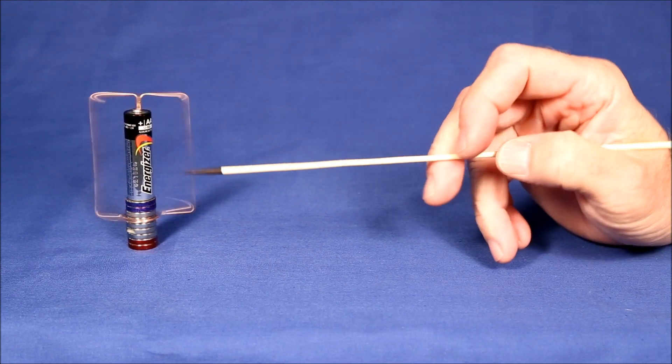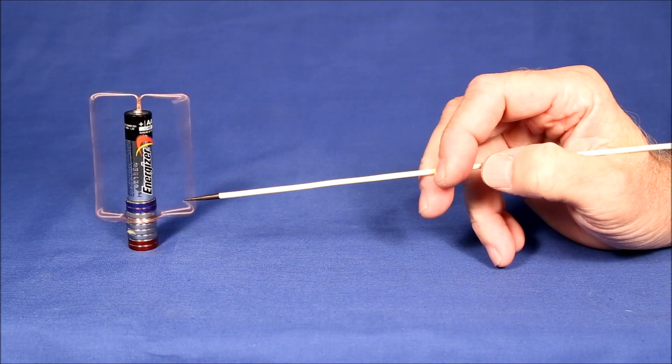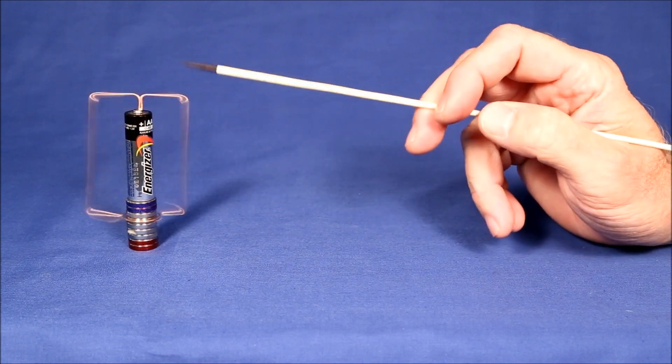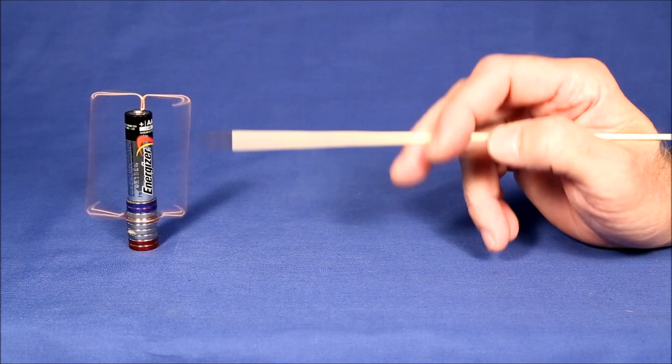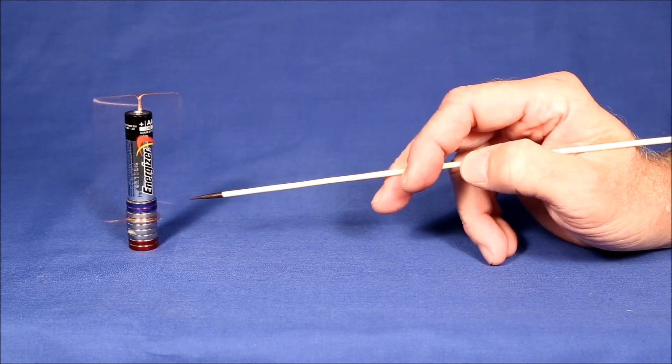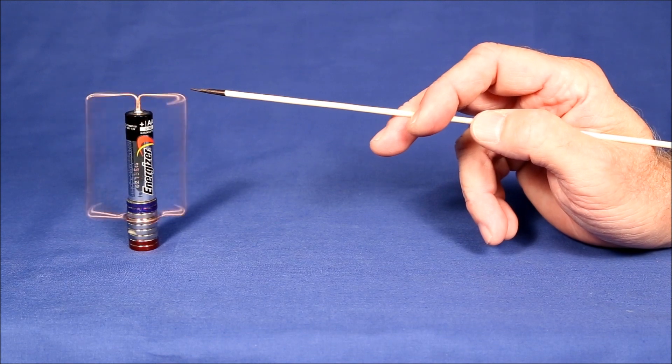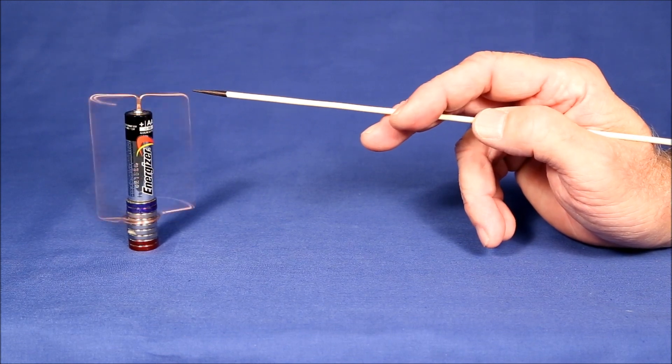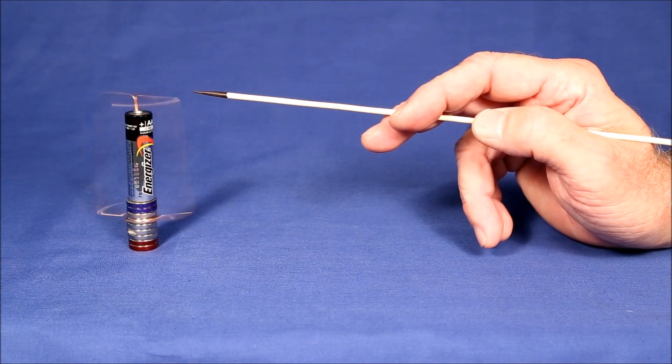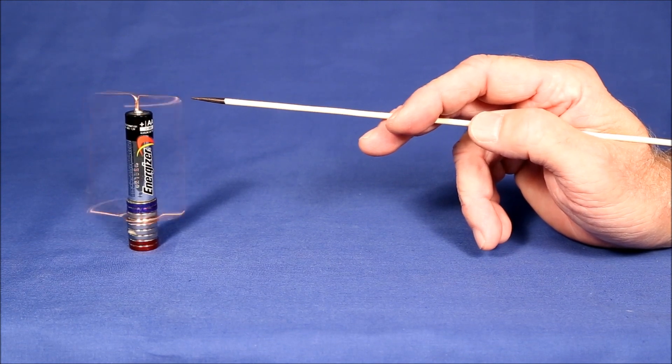About now, some of you are questioning a problem with this idea. And that is, we all know that electrons flow out of the negative end of the battery, not the positive end. Well, what's going on? The reason we use positive current flow is because several hundred years ago, Benjamin Franklin made a big mistake.